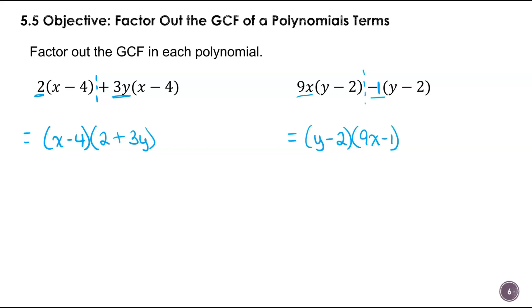On the next one, I have a common factor of (y minus 2) on both parts. The other factor will be (9x minus 1), which is my second binomial. So the factored form is (y - 2)(9x - 1).